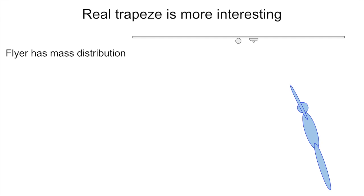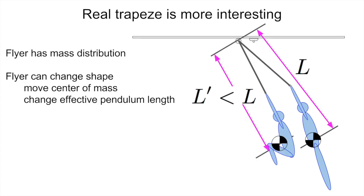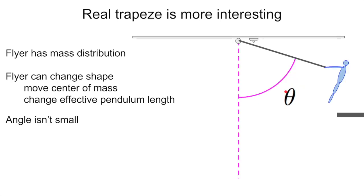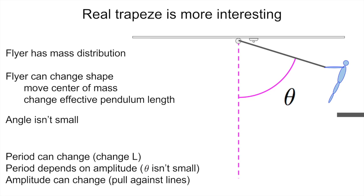Real trapeze is fortunately more interesting. The flyer is not a point mass — the flyer has a mass distribution. By changing shape, the flyer can move the center of mass and therefore change the effective pendulum length. For example, if the flyer bends their knees and brings their thighs up, their center of mass moves up and the effective length of the pendulum becomes a little bit smaller. Also, the angle isn't actually small in flying trapeze — you start at a high angle and can end up at a high angle. Because of that, the period can change as the flyer changes L. You can pull against the lines and do work in the system, and therefore you can pump up your full swing.